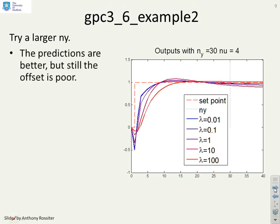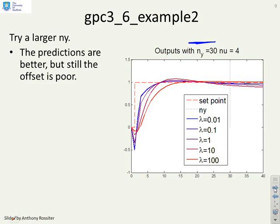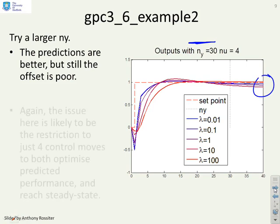What if I try a larger ny then? So now I've gone to an ny of 30 and now you can see that that horizon is just about long enough in order to capture the key dynamics of the outputs. And for the smaller values of lambda it's just about good enough, you might even argue for lambda equals 100 it's just about good enough in this case but you're still getting some offsets over here.